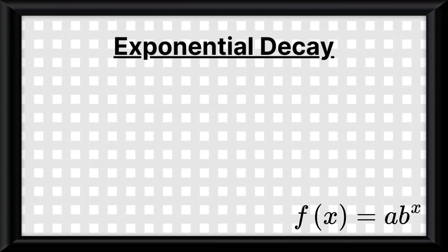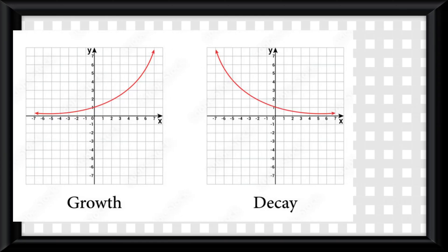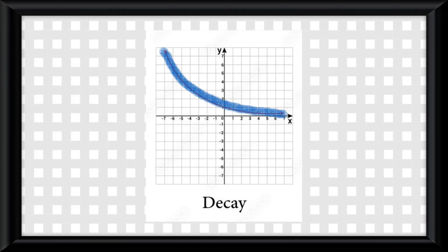An exponential decay happens when a is greater than 0, and b is less than 1 but greater than 0. It looks like this on a graph, and you can see it decreasing, hence it being called a decay.